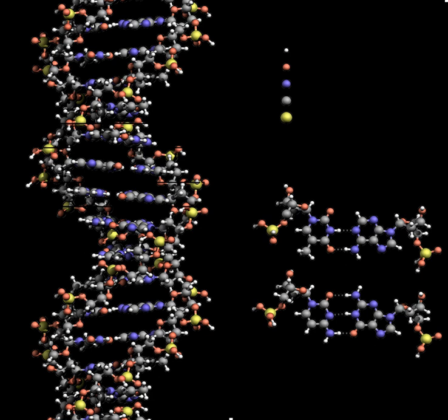Twin helical strands form the DNA backbone. Another double helix may be found tracing the spaces, or grooves, between the strands. These voids are adjacent to the base pairs and may provide a binding site. As the strands are not symmetrically located with respect to each other, the grooves are unequally sized.